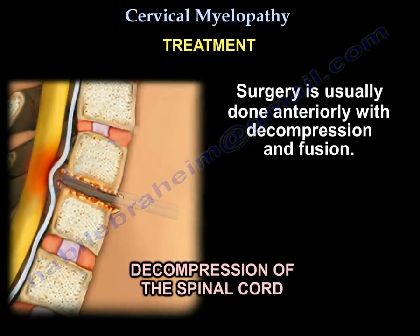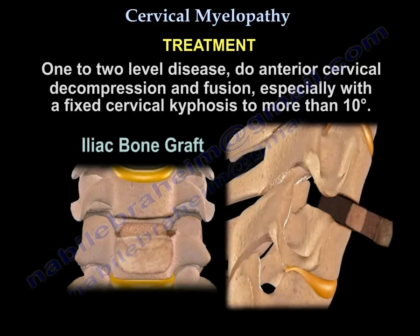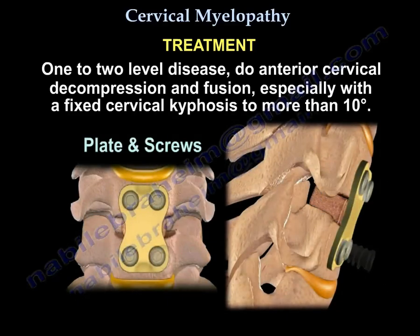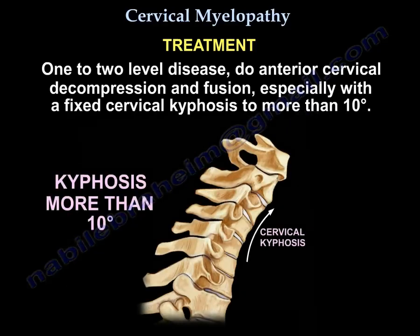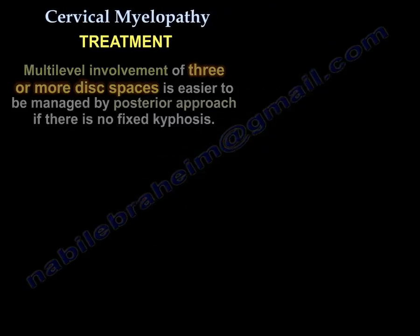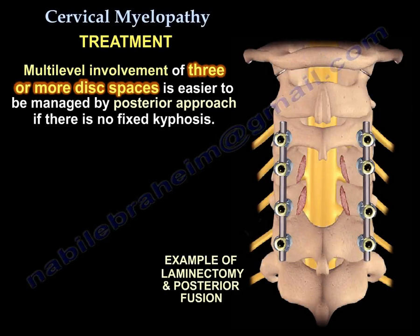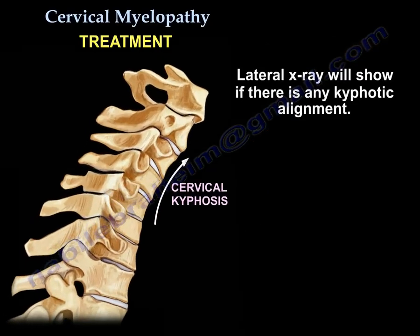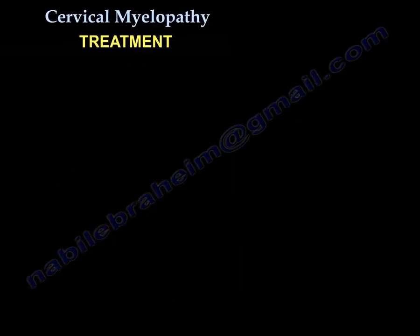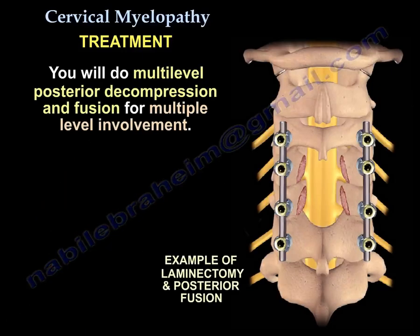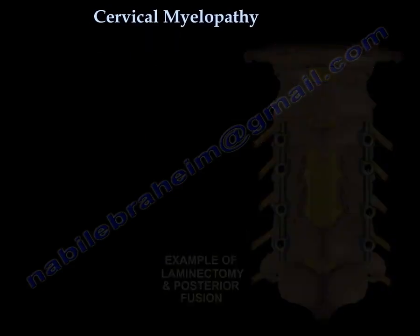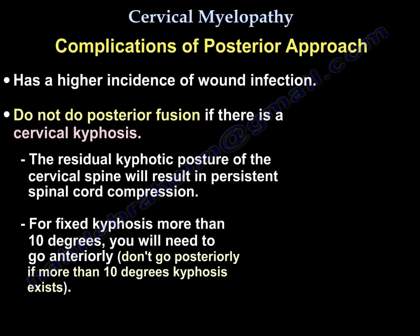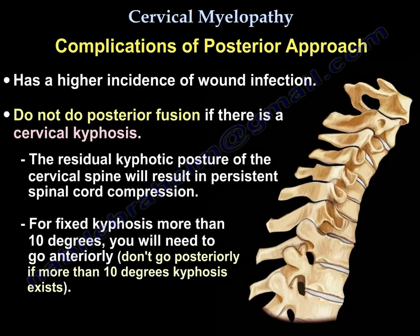Surgery is usually done anteriorly with decompression and fusion for 1-2 level disease, especially with a fixed cervical kyphosis greater than 10 degrees. Multi-level involvement of three or more disc spaces is easier to manage by a posterior approach if there is no fixed kyphosis. The lateral X-ray will show if there is any kyphotic alignment. Posterior decompression and fusion is used for multiple-level involvement, though it has a higher incidence of wound infection.